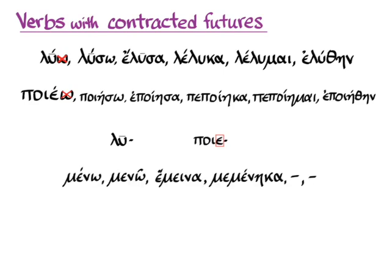Some verbs — and meno (meno, emena, memeneka) is one of them — have a second principal part that is unusual. You can see that the second principal part of meno has an unusual accent. It has an omega at the end, which is what you're used to, but it doesn't have recessive accent. There's a circumflex over that omega because the second principal part of meno is actually a contracted version of meno. By convention we see this in lexica and in our vocabularies as meno, because nearly every single contracted second principal part is an epsilon contract.